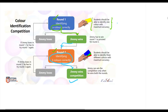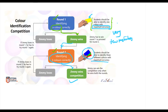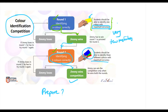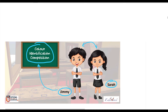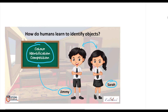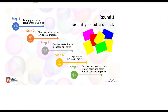The idea is that Jimmy should be able to identify the color with maximum accuracy, making very few mistakes — and the same applies to identifying three colors in round 2. Just stepping back: we are trying to understand how we train a human to identify objects. In this case we will take the example of color identification, with our two friends Jimmy and Sara helping Jimmy prepare for the competition.